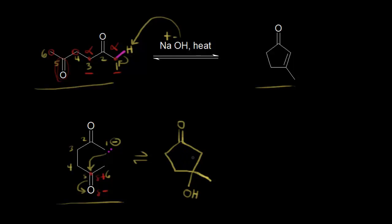The electrons in magenta moved in here to form our bond. Numbering our carbons: carbon one, two, three, four, five, and six — using the numbering system from the left — just to help us follow those carbons along. So this would be our aldol.